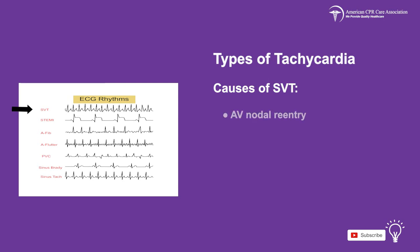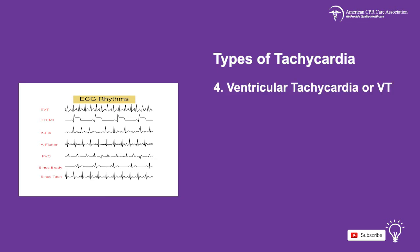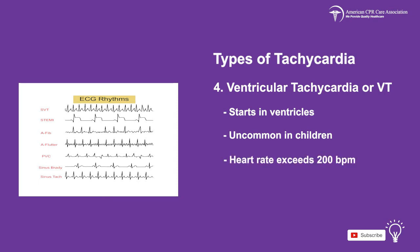Some causes of SVT include AV nodal reentry, ectopic atrial focus, and accessory pathway entry. Ventricular tachycardia, or VT, starts in the ventricles. This condition is uncommon in children, but when present, VT with a pulse can cause the child's heart rate to exceed 200 beats per minute, and may turn into ventricular fibrillation or pulseless VT.